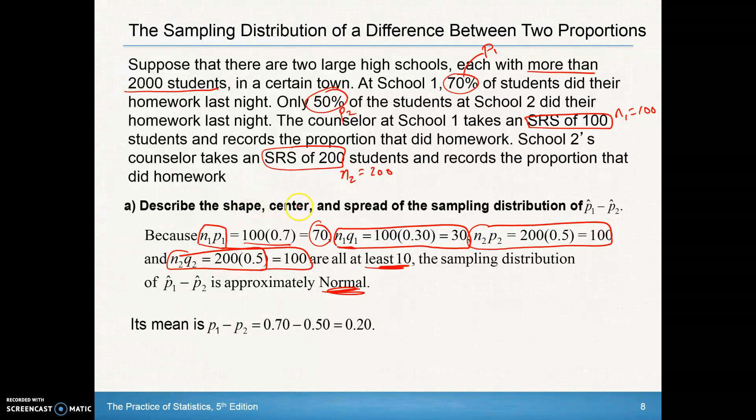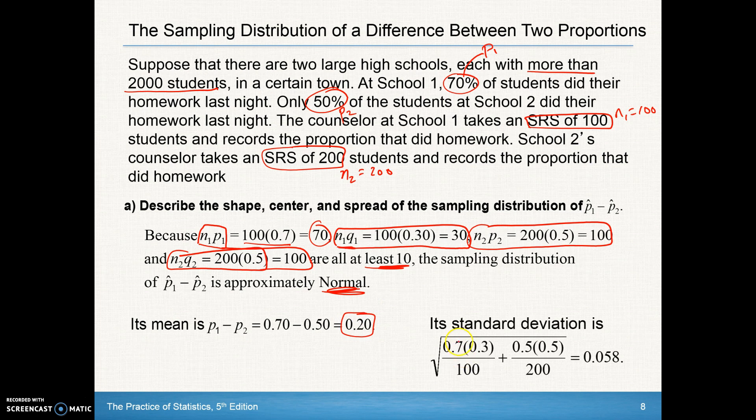There's our shape. Our center is just the difference between those two proportions. Our standard deviation is calculated—notice we use the P's because we knew what these P's were. There was data given to us before. So we got that as our standard deviation. We would have a normal distribution of these differences, centered at 0.20 with standard deviation 0.058. Then we could find probabilities underneath that normal curve.